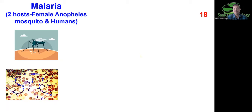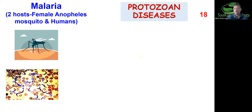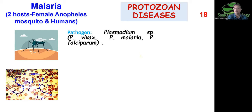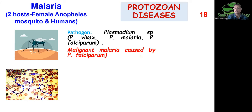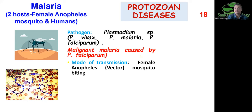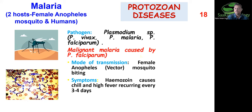Now let us talk about malaria, which is very important. Malaria is caused by Plasmodium — a digenic parasite with two hosts: female Anopheles mosquito and human. The species are Plasmodium vivax, Plasmodium malariae, Plasmodium ovale, and Plasmodium falciparum. Plasmodium falciparum causes cerebral malaria, which is the most dangerous and fatal form. Mode of transmission is through the bite of the female Anopheles mosquito. Symptoms include chills and rigors recurring every three to four days.